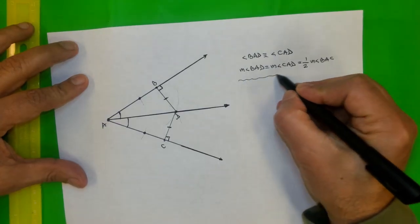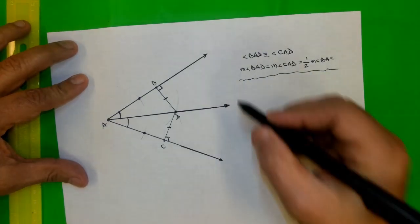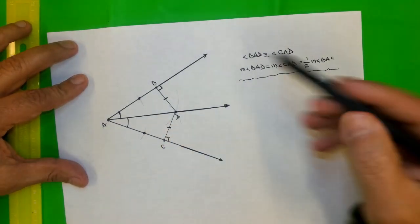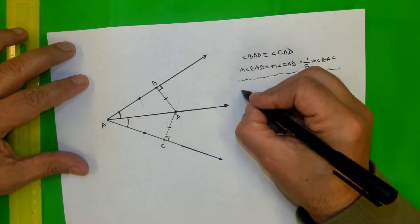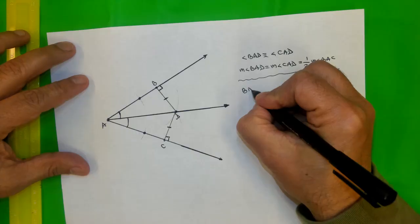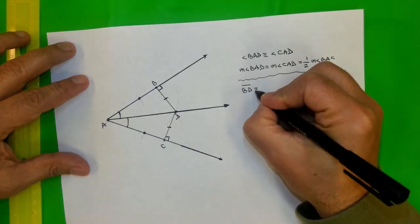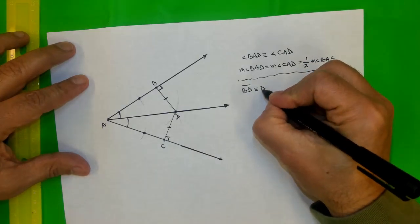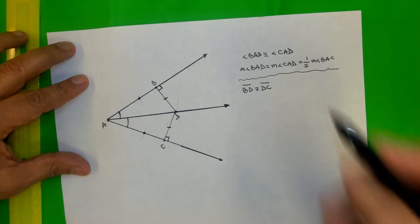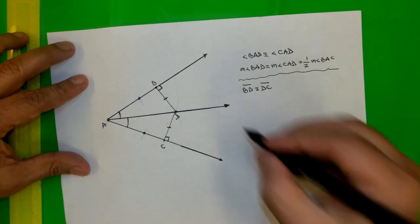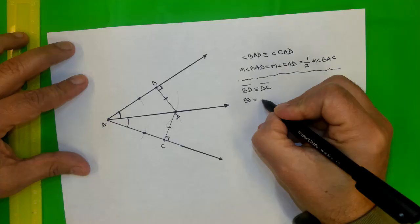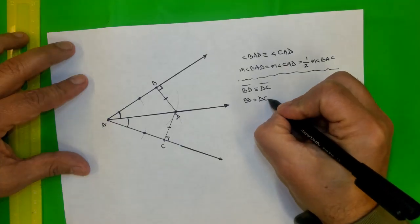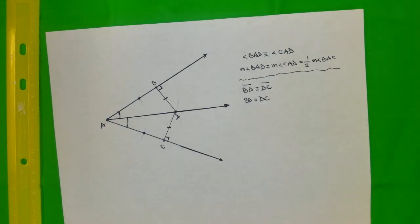So that's the first property of the angle bisector I mentioned. And now I said equidistant. This is a key word. Any point on this angle bisector is equidistant from the sides of the angle. So what I meant is BD congruent to DC. That's a property of the angle bisector. Of course you can say the measure or length of BD is the same as the length of DC.